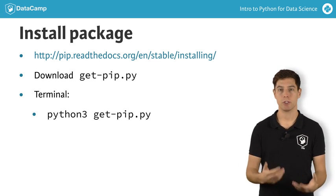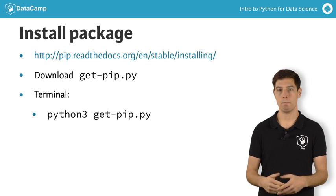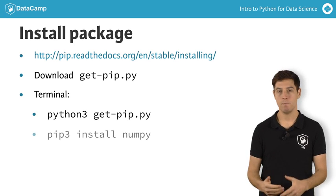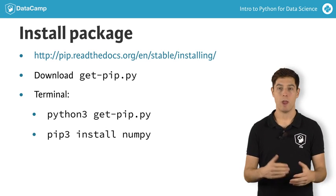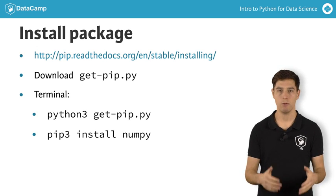Now you can use pip to actually install a Python package of your choosing. Suppose we want to install the numpy package, which you'll learn about in the next chapter. You type pip3 install numpy. You have to use the command python3 and pip3 here to tell our system that we're working with Python version 3.